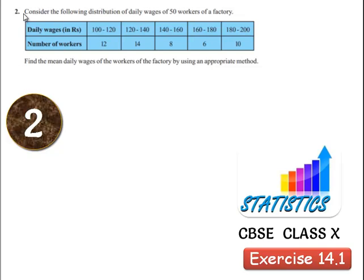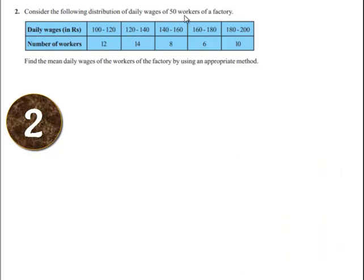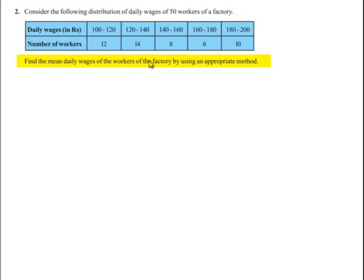Here the given problem is: consider the following distribution of daily wages of 50 workers of a factory. Daily wages in rupees are given as grouped data and number of workers are given in the form of frequencies. They have asked us to find the mean daily wages of the workers of the factory by using an appropriate method.